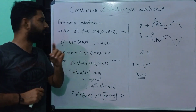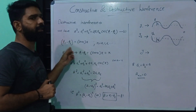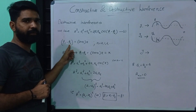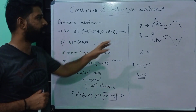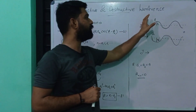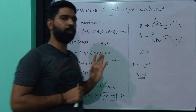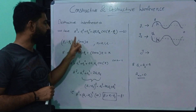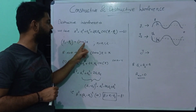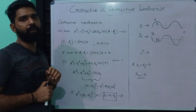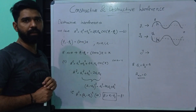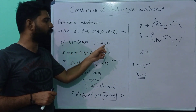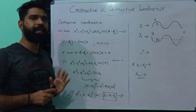We are going to get a condition. The condition is φ1 minus φ2 — that is, the phase difference between wave 1 and wave 2 — is equal to (2n + 1) times π. In this condition, n takes values 0, 1, 2, 3, etc.